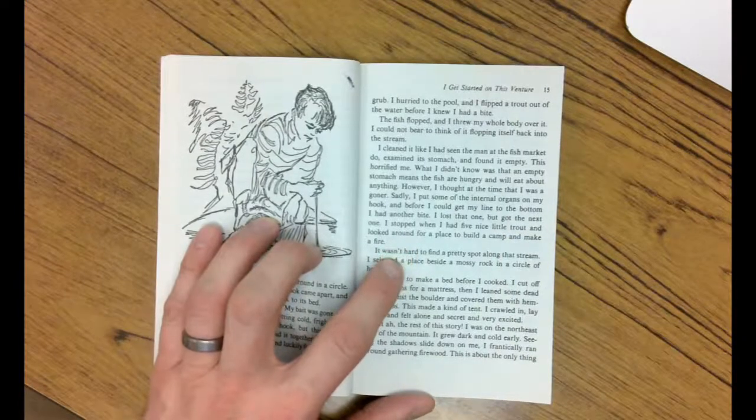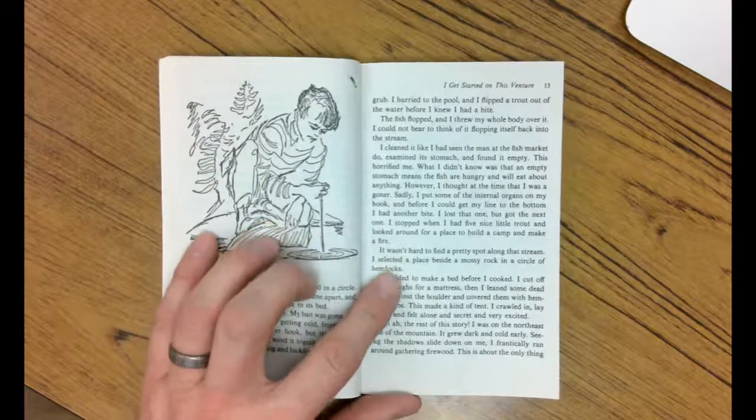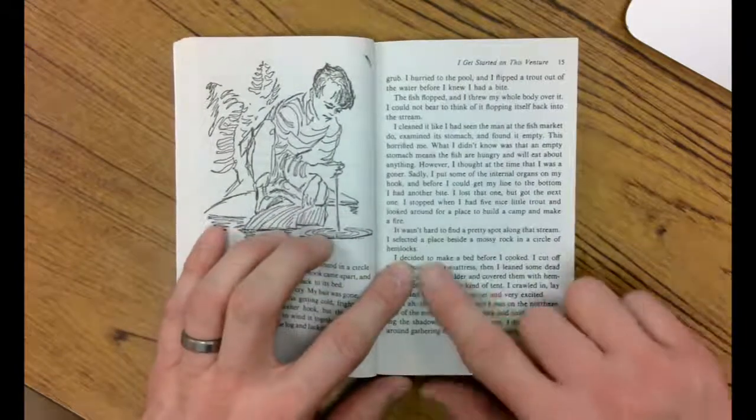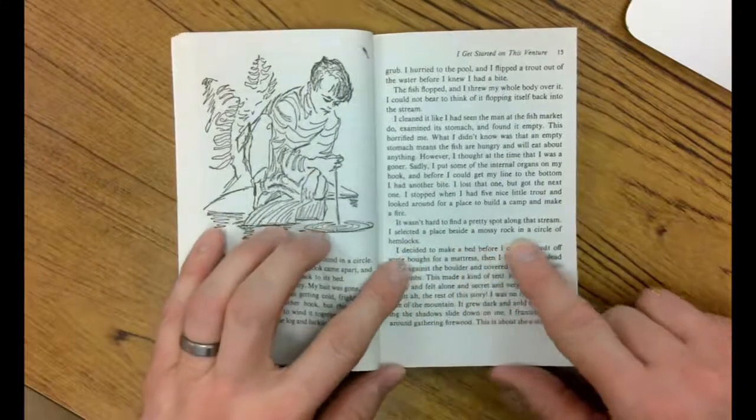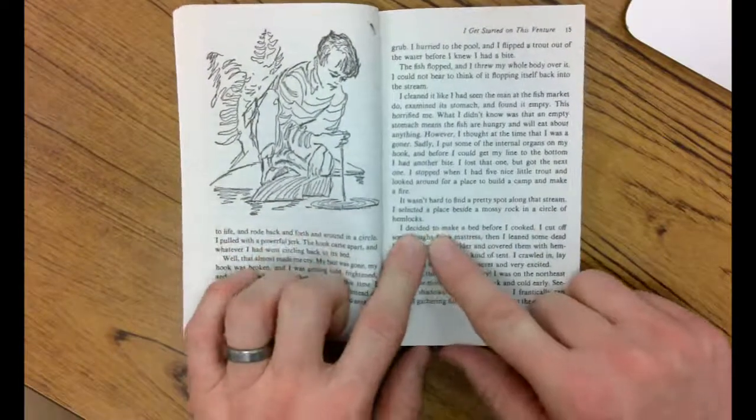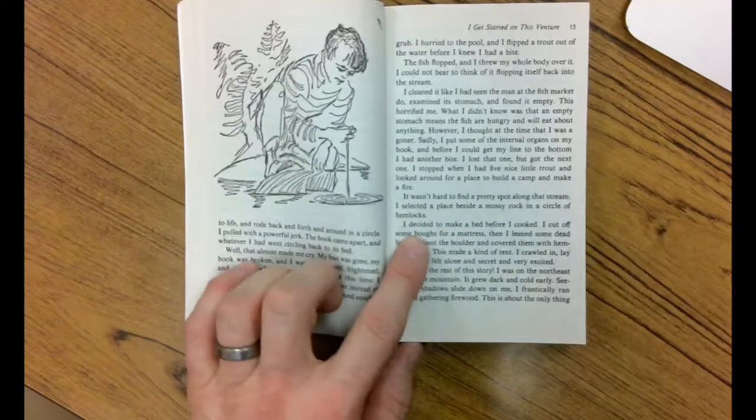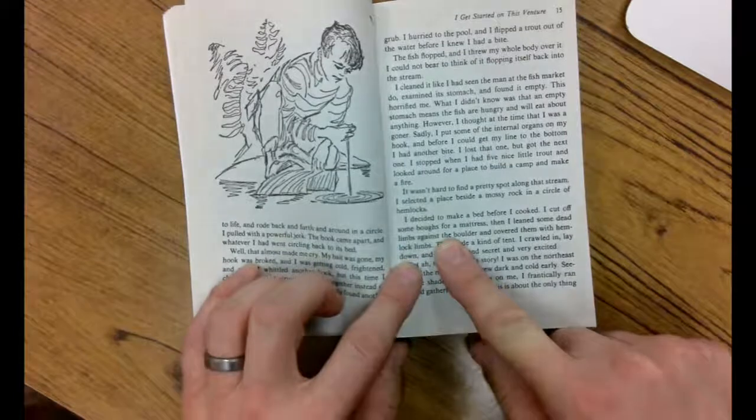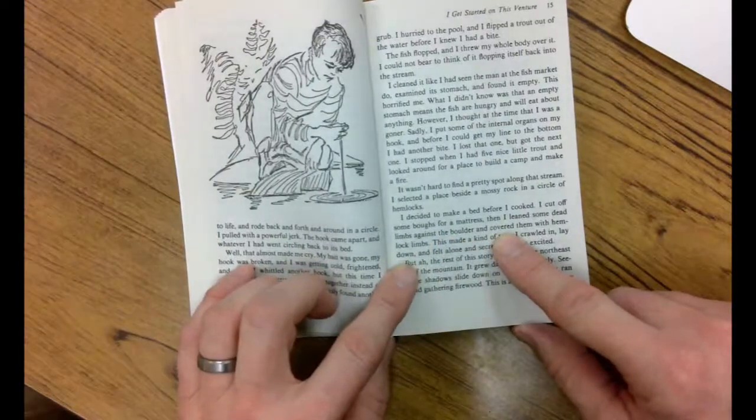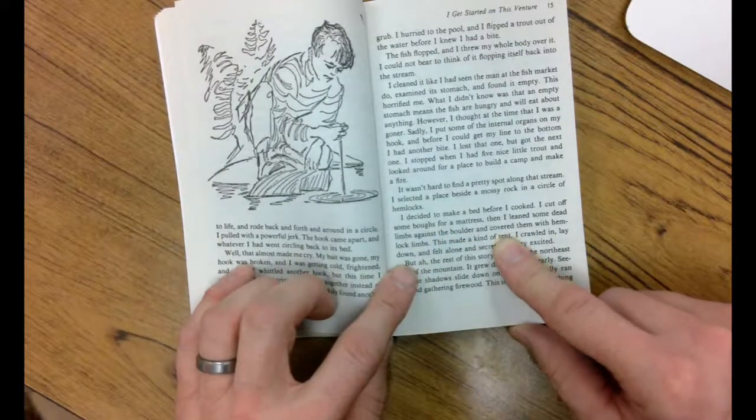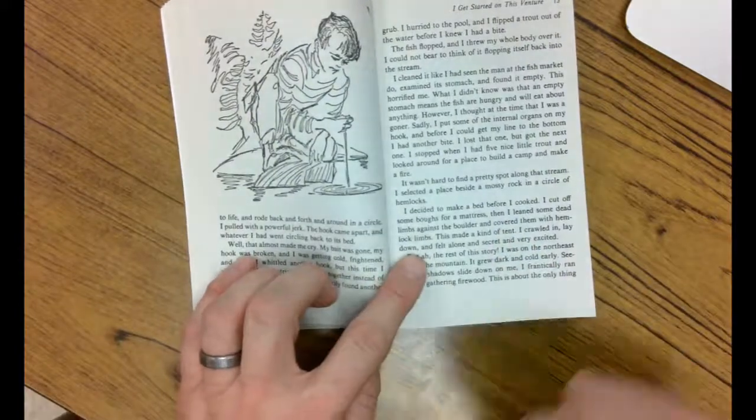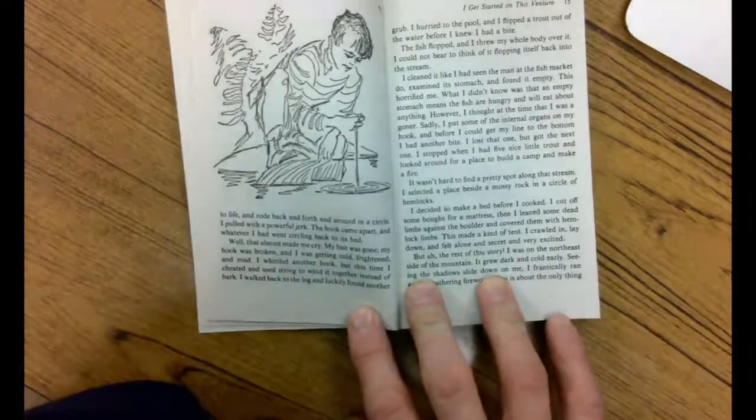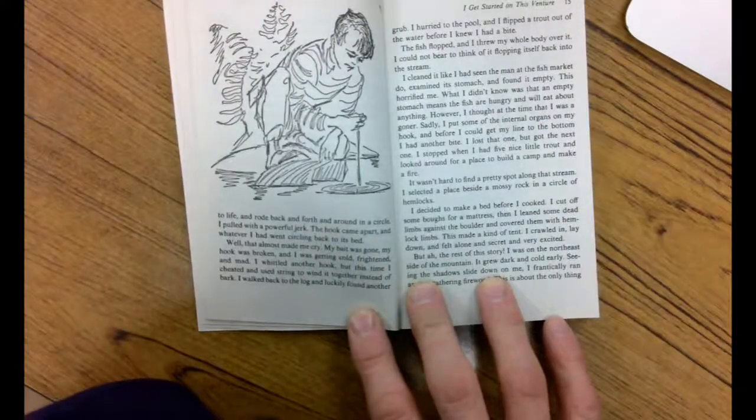And I looked around for a place to build a camp and make a fire. It wasn't hard to find a pretty spot along the stream. I selected a place beside a mossy rock in a circle of hemlocks. Those are a type of tree. I decided to make a bed before I cooked. I cut off some boughs for a mattress. Then I leaned some dead limbs against the boulder and covered them with hemlock limbs. This made a kind of tent. I crawled in, lay down, and felt alone and secret and very excited.